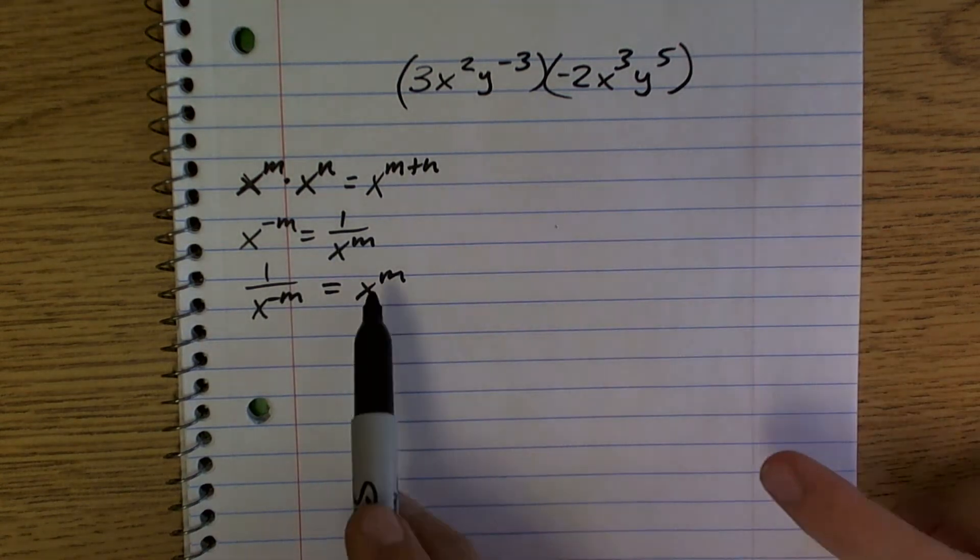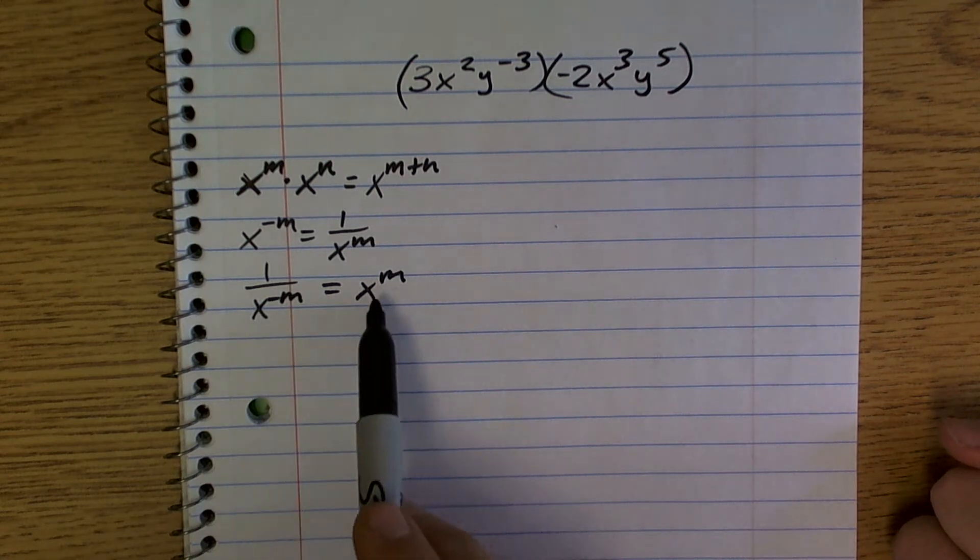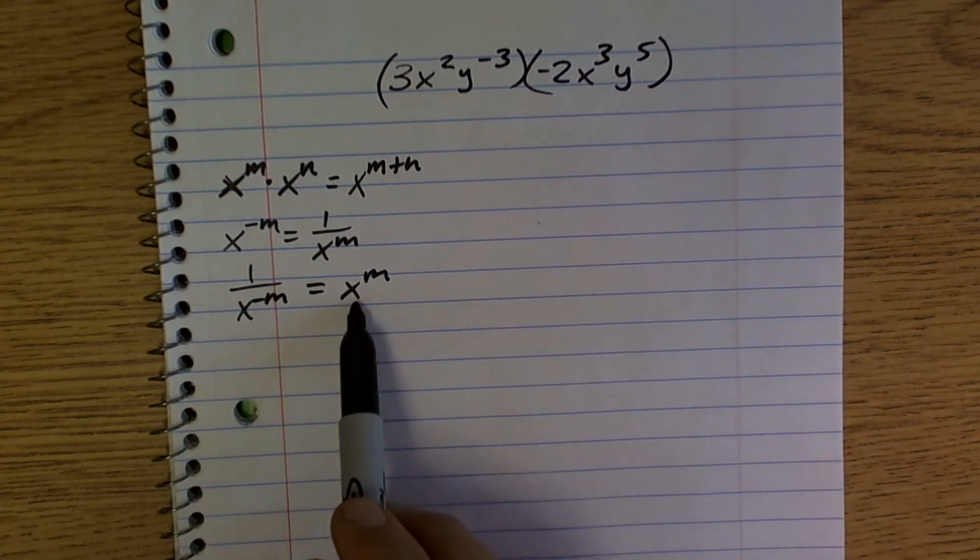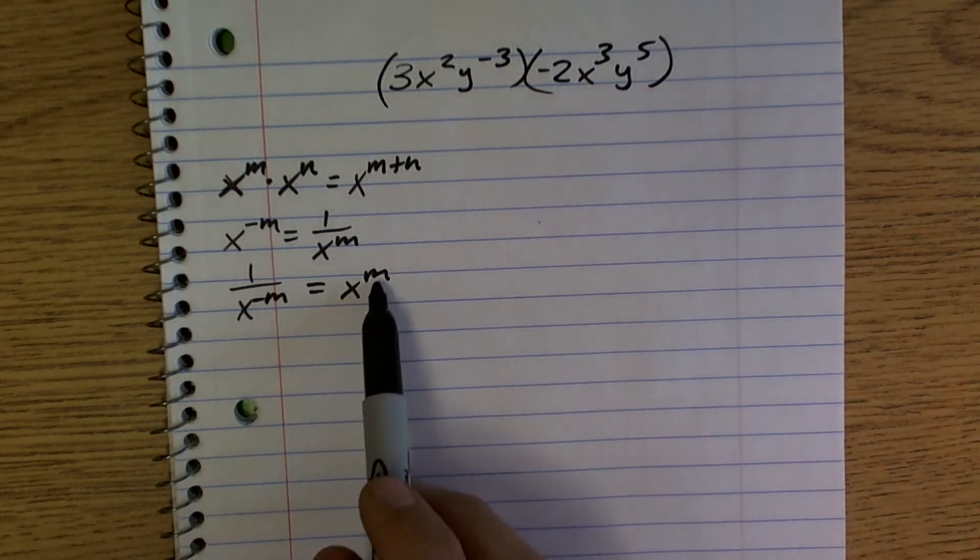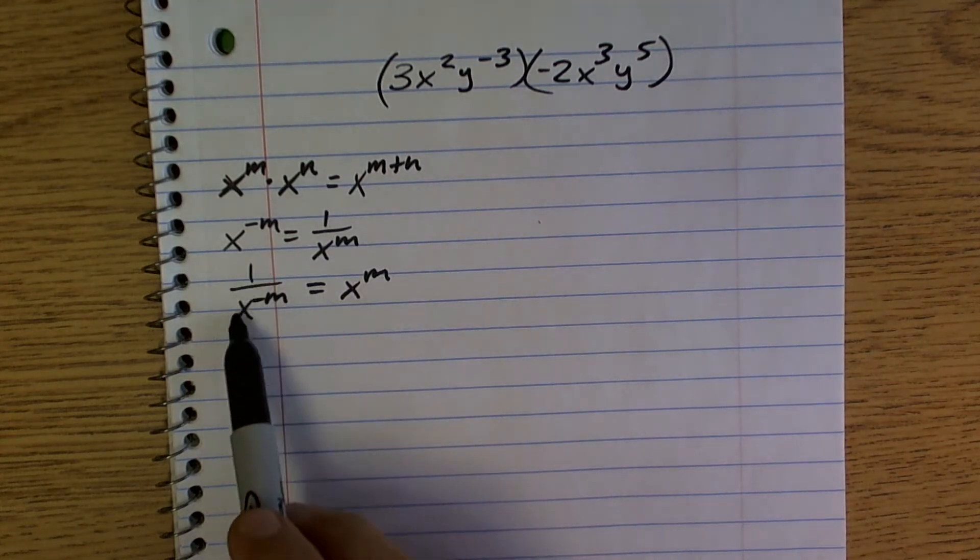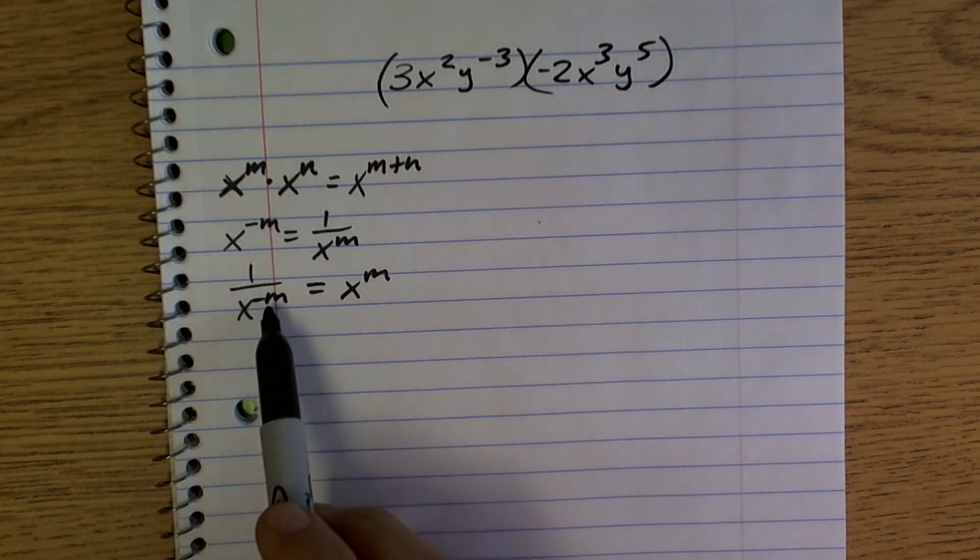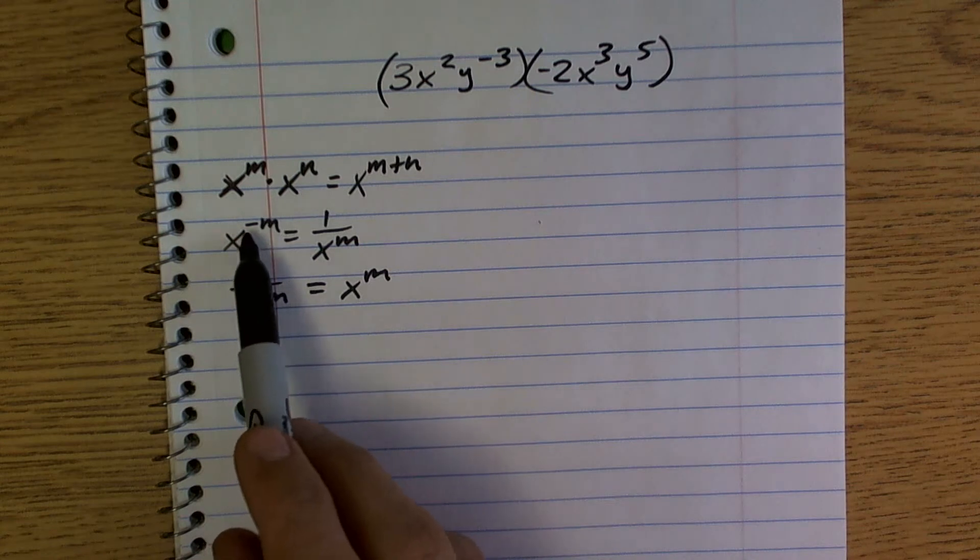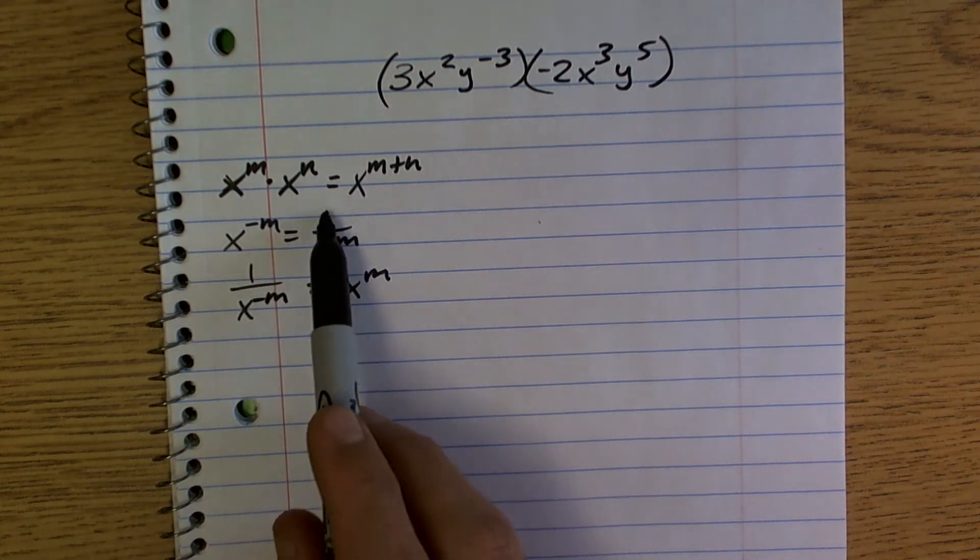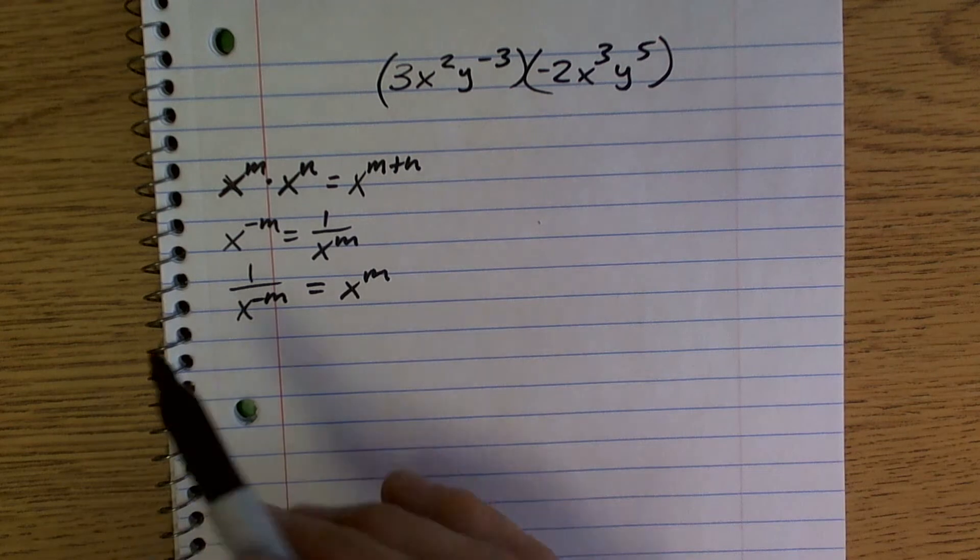Would this equal x to the m or x to the negative m? What do you mean? Which one? Would this equal negative m? That equal x to the m is equal to 1 over x to the negative m. Okay. Just x to the negative m is equal to 1 over x to the m. So it's the positive, but it's down below.